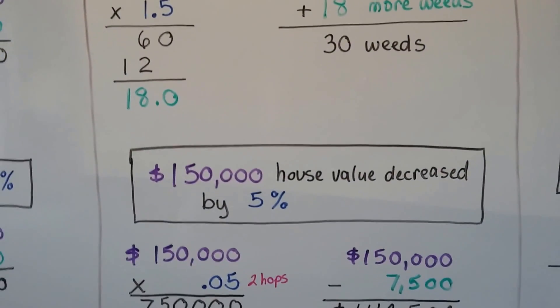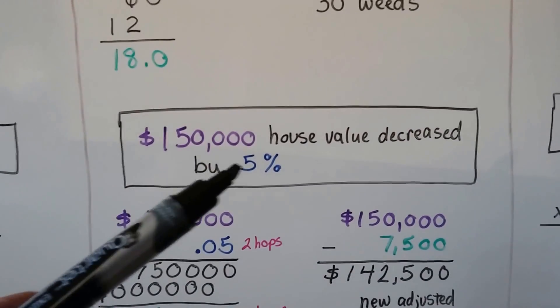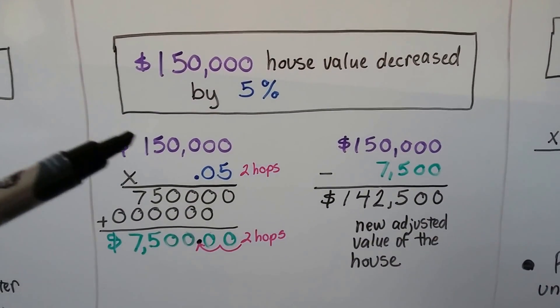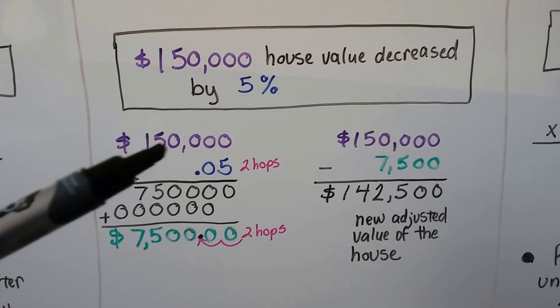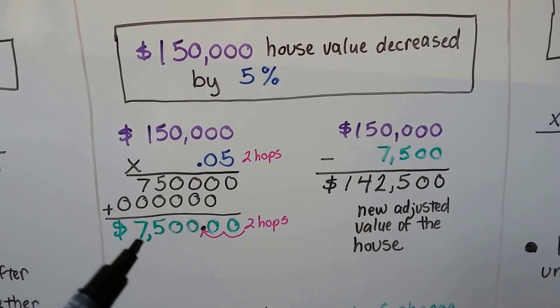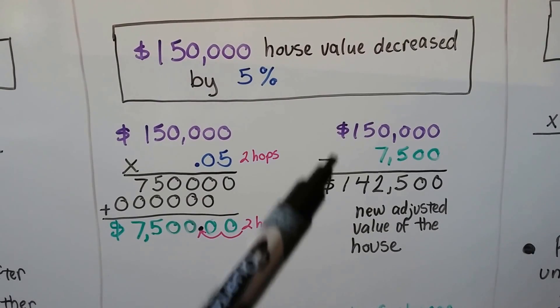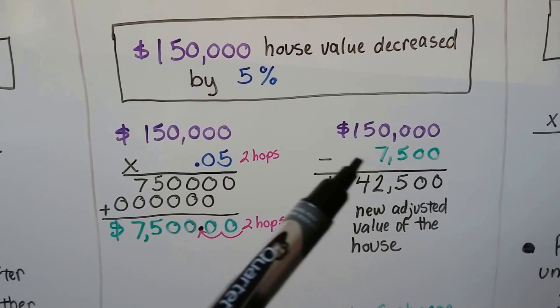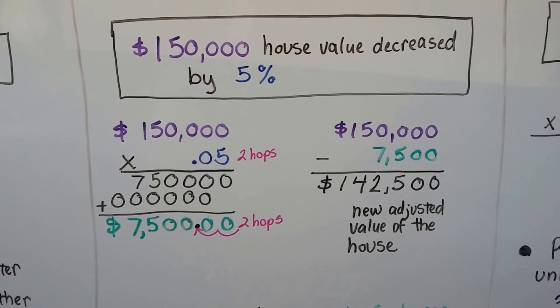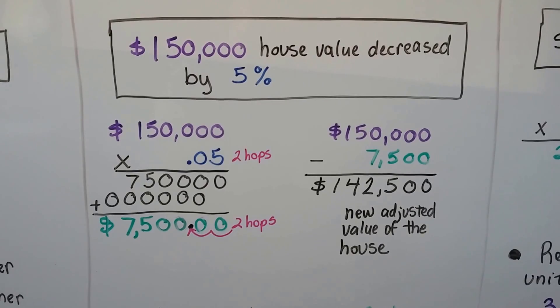If we have a house that's $150,000 in value and it decreases by 5 percent, we can find the new value of the house. $150,000 times .05, that's 5 percent as a decimal. We get $7,500. We subtract, because it's a decrease, the $7,500 from the $150,000, and find out that the new adjusted value of the house is $142,500.